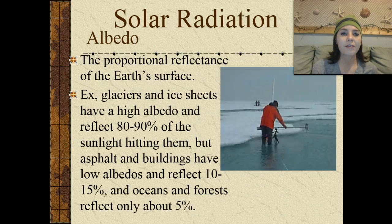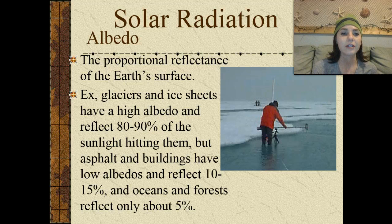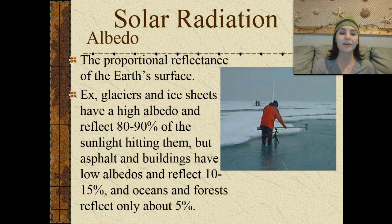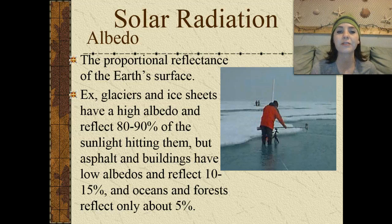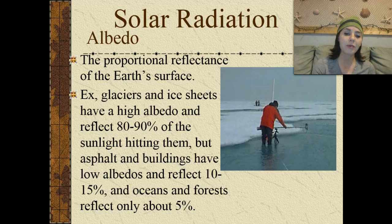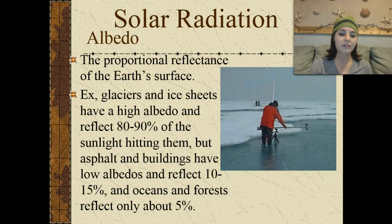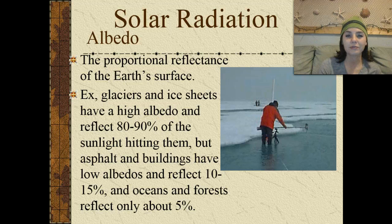We also have the albedo effect. This is the proportional reflectance of earth's surface. For example, glaciers and ice sheets have a very high albedo and reflect 80 to 90 percent of the sunlight that hits them. However, asphalt in buildings have very low albedos, and they reflect 10 to 15 percent. Oceans and forests reflect about 5 percent.